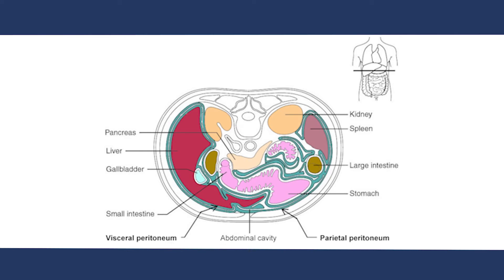The peritoneum is a clear lining which covers both organs within the abdomen and the wall of the abdomen. It has two layers. One layer lines the abdominal wall and is called the parietal layer. The second layer covers the organs and is called the visceral layer. There is a small amount of fluid between the two layers which separates them and allows them to slide over each other, allowing us to move around without causing any friction on the layers.